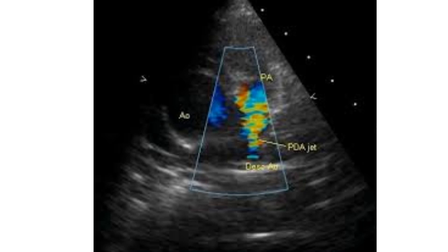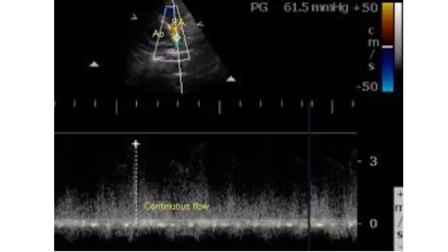The image is in the parasternal short axis view. Continuous wave Doppler interrogation of the jet, guided by colour flow mapping, picks up the continuous flow with a peak gradient of 61.5 mmHg. The gradient is calculated from the velocity measured by the device using the formula P equals 4V squared.